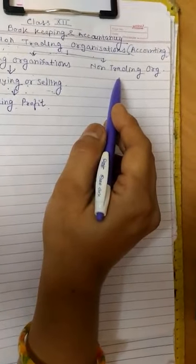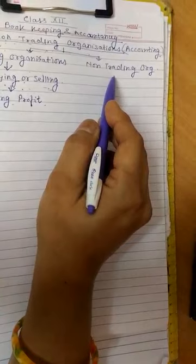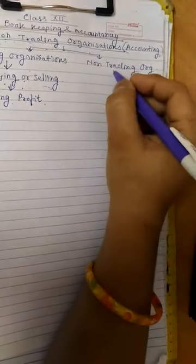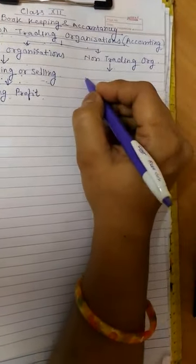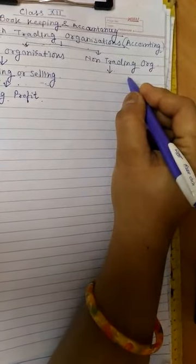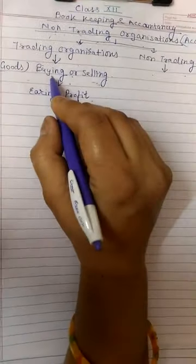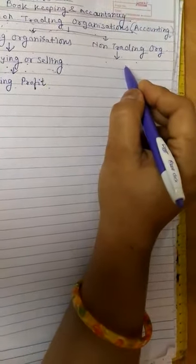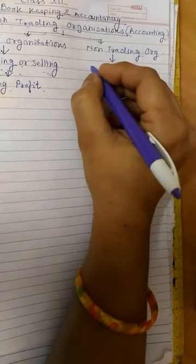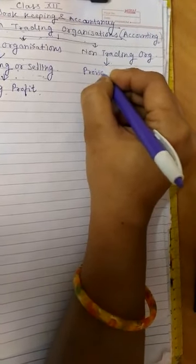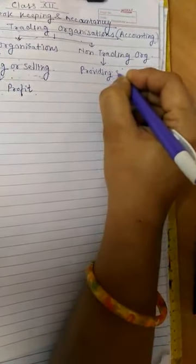But what is non-trading organization? Let us know. Non-trading organizations are that type of organization which are not related to buying and selling of any commodity or goods. They are related to providing services.